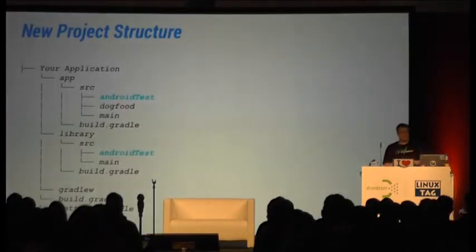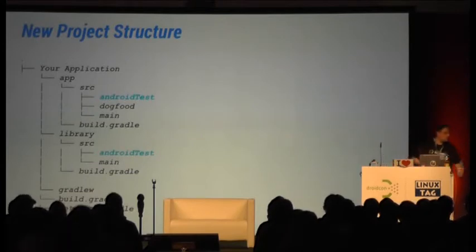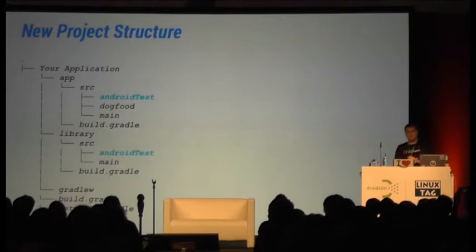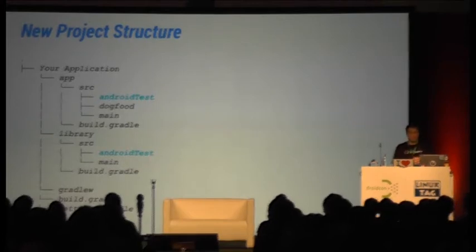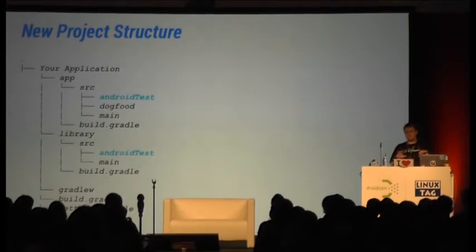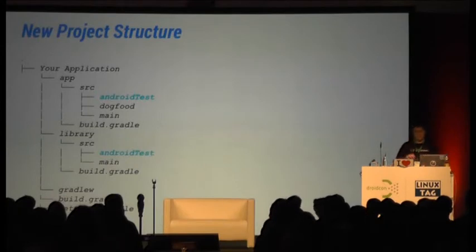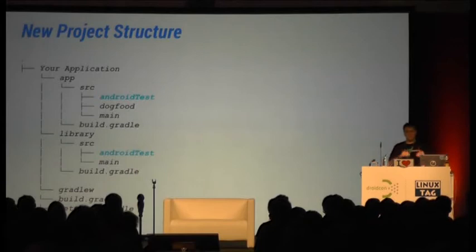Since a lot of you have already worked with Gradle, we changed the project structure a little bit when we moved to Gradle. Now at the top level you have your top-level build Gradle file — this is where you'd normally do all cross-project or cross-module configurations. Then you have the settings Gradle file, where you tell Gradle which modules you want to build. In this case we have two modules: your main app module and a library module.